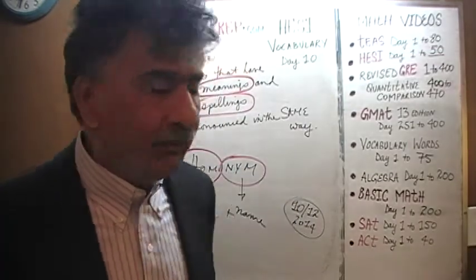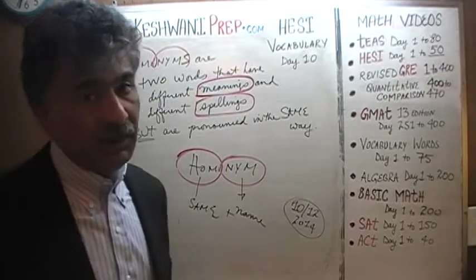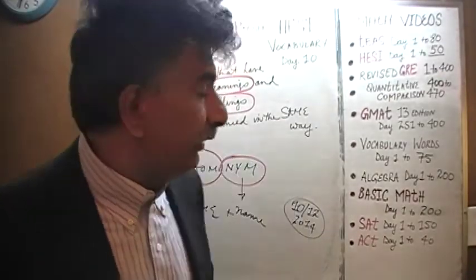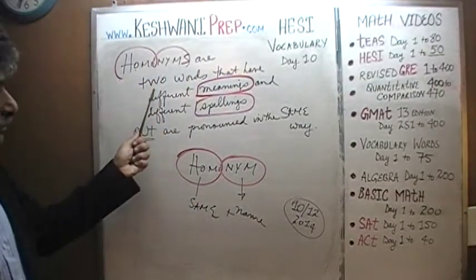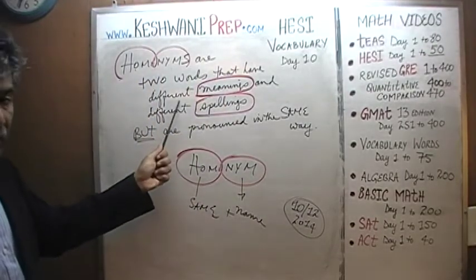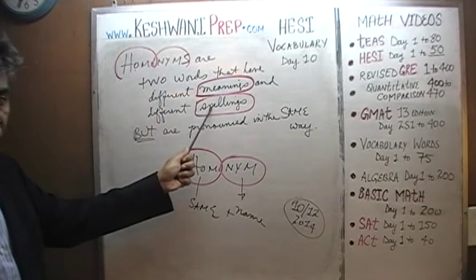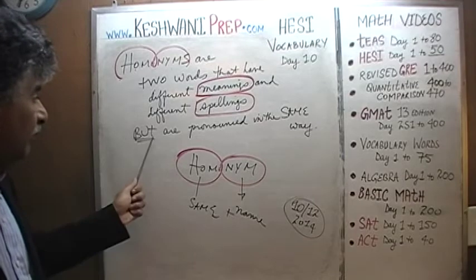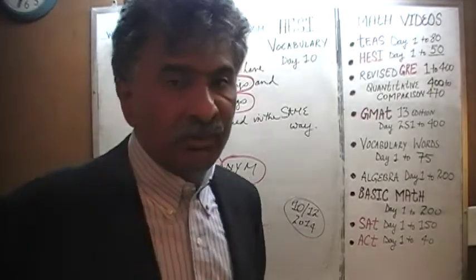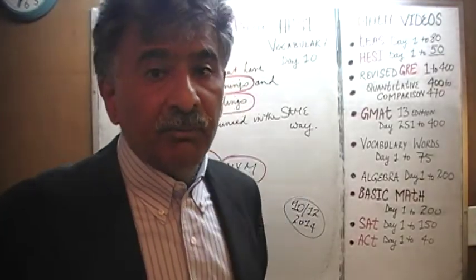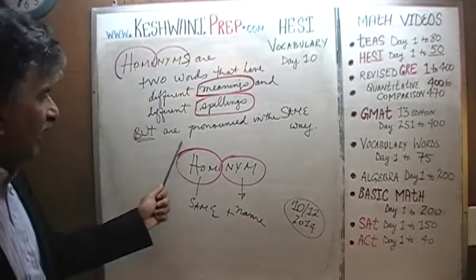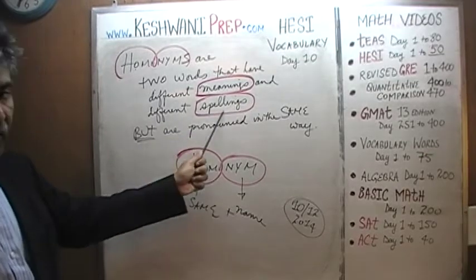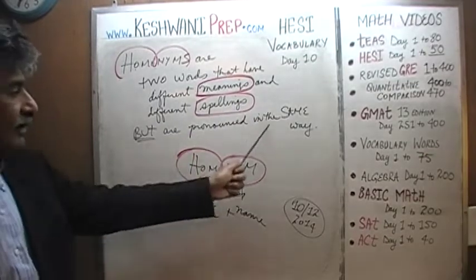What are homonyms? Homonyms are words, and typically they come in pairs — very rarely you can find a triplet, but typically you find pairs. These are pairs of words that have different meanings, they have different spellings, they are not spelled in the same way, they do not mean the same thing. But for some strange and inexplicable reason, we have decided to pronounce them in the same way. One more time: these are words that have different meanings and different spellings, but are pronounced in the same way.